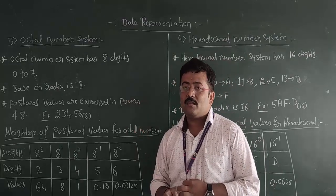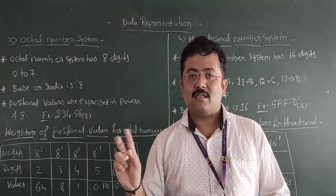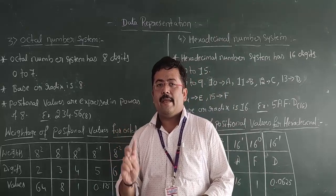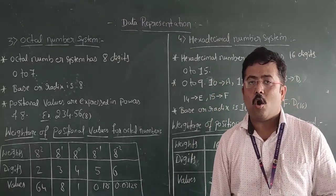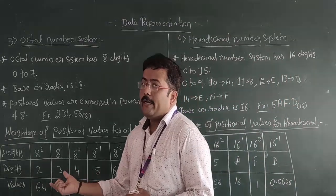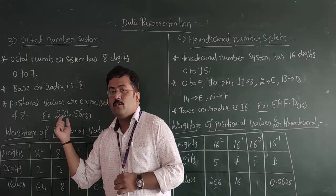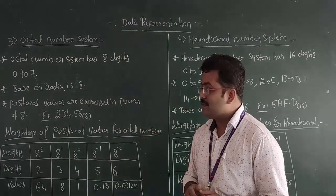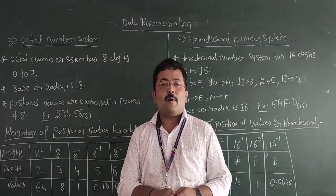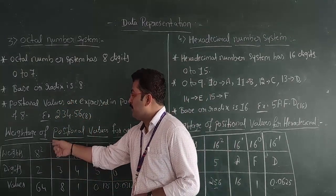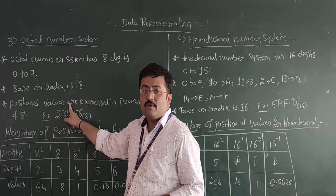The octal number system contains 8 digits, 0 to 7, so the base value is 8. The weightage of positional values are expressed in the power of 8. So for the integer part, the positions are 8 to the power of 2, 8 to the power of 1, and 8 to the power of 0.